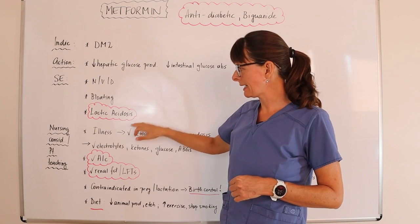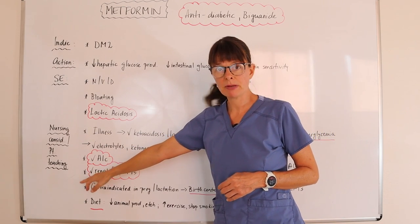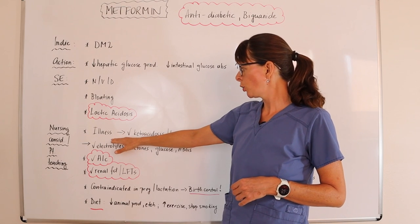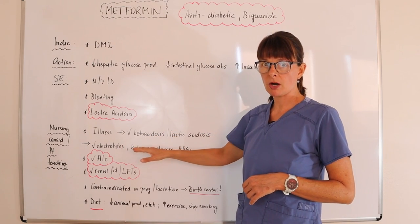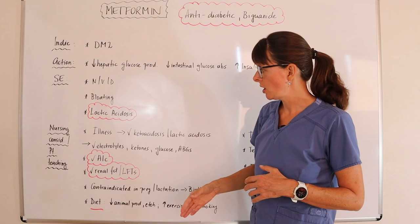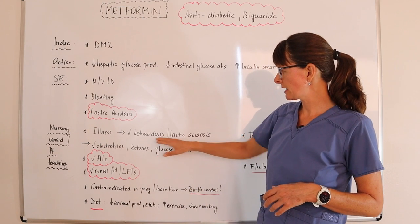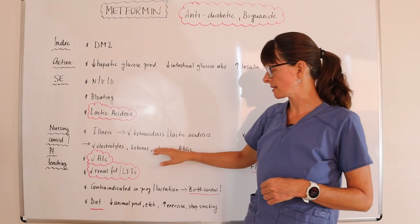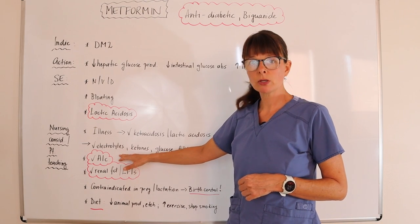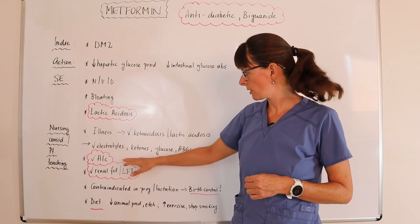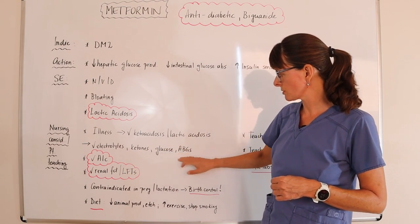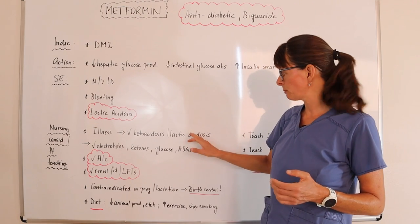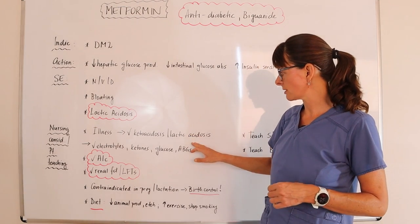For nursing considerations and patient teaching, in case of illness we need to make sure that we check our patient and that they are aware of the signs and symptoms of ketoacidosis and/or lactic acidosis. If that happens, we need to check their electrolytes, ketone levels, glucose, and their ABGs because their pH might be off because of the acidotic state.